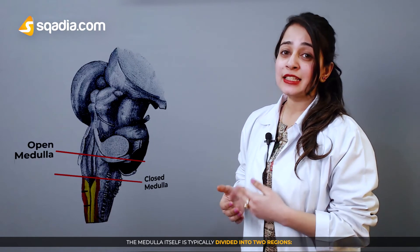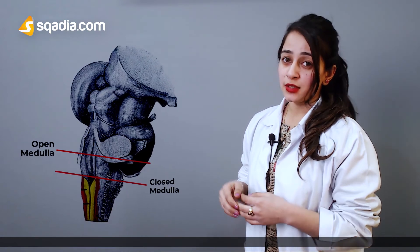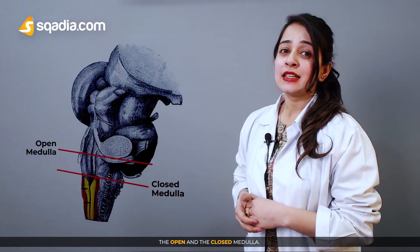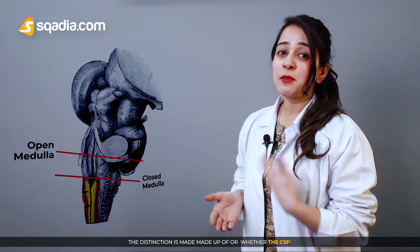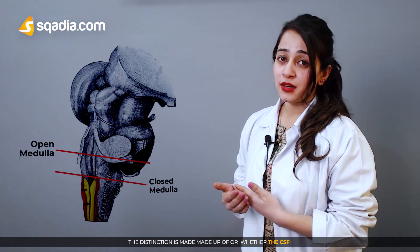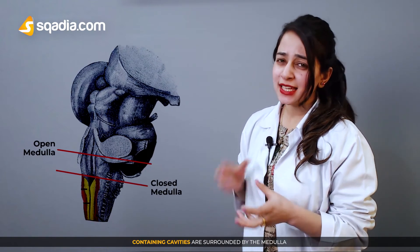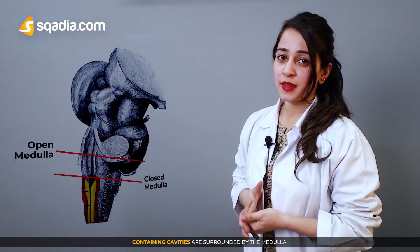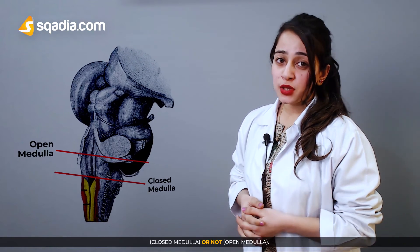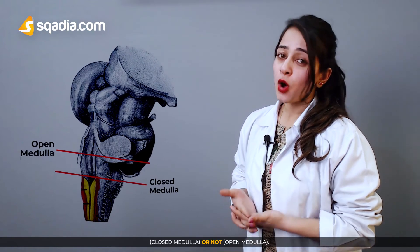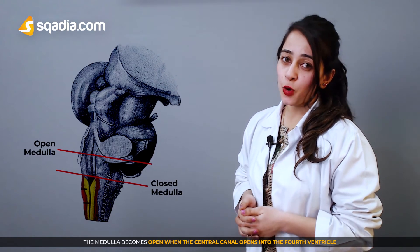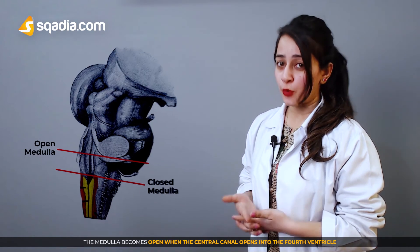The medulla itself is typically divided into two regions: the open and the closed medulla. The distinction is based on whether the CSF-containing cavities are surrounded by the medulla. The medulla becomes open when the central canal opens into the fourth ventricle.